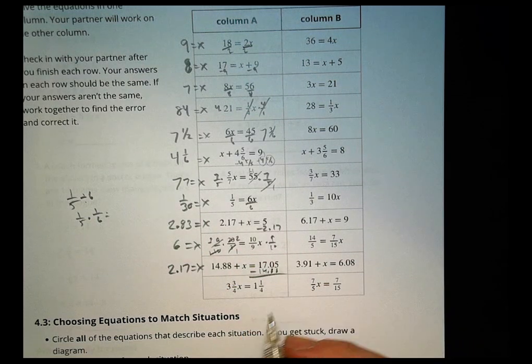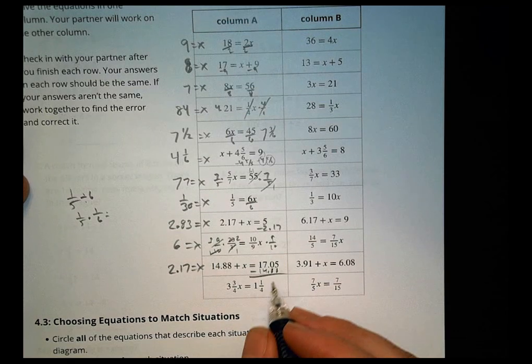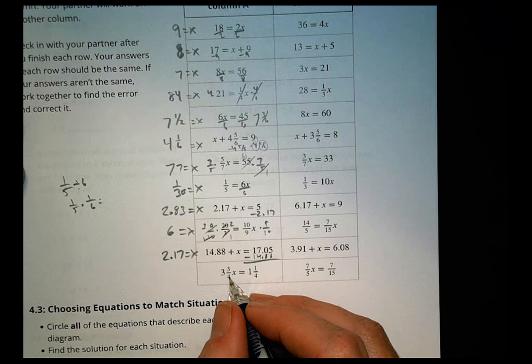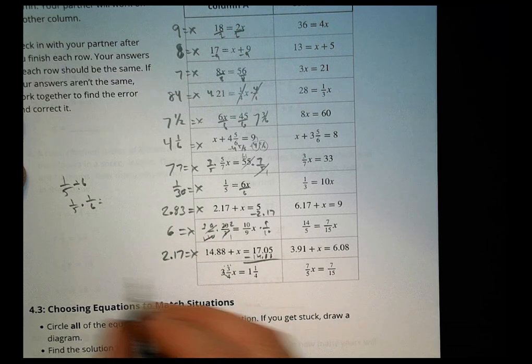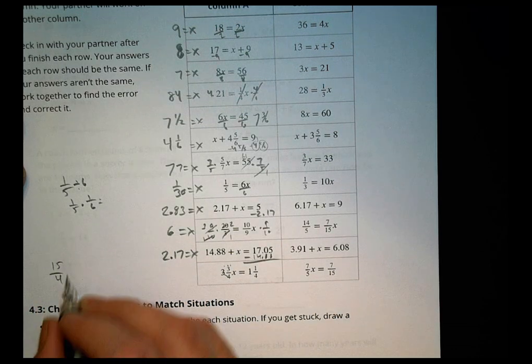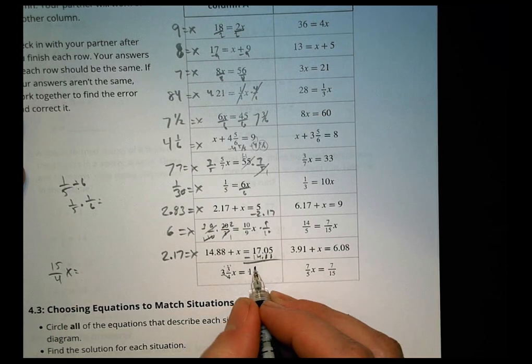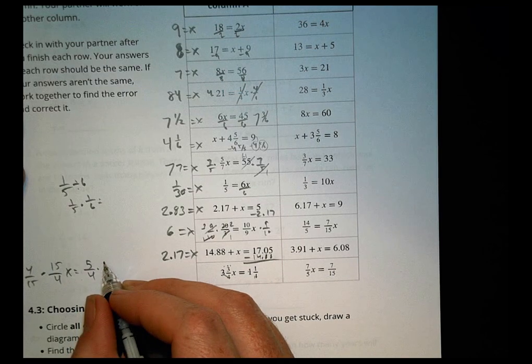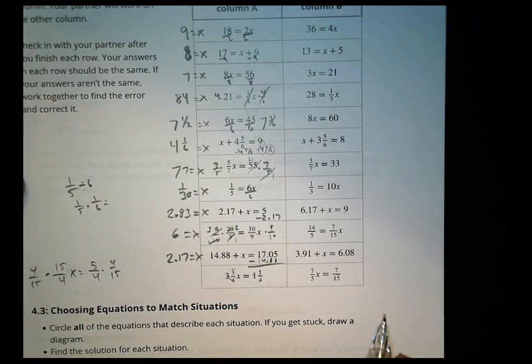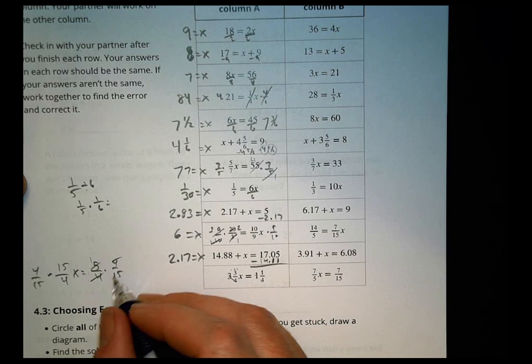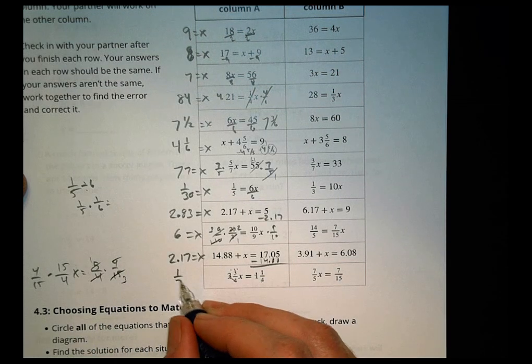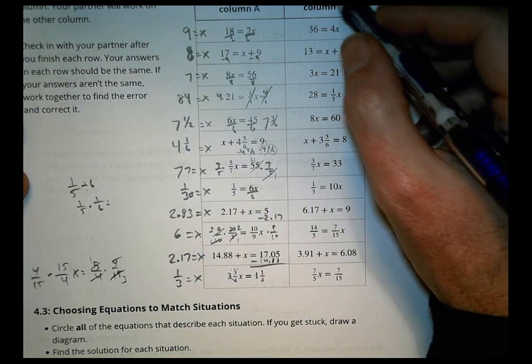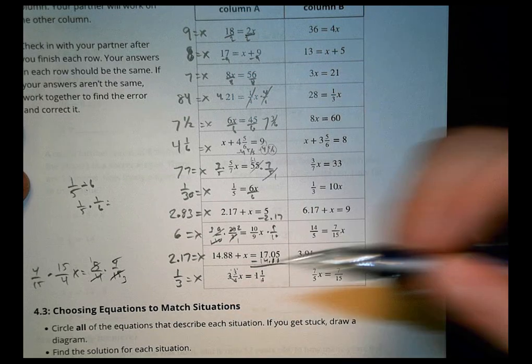And then finally, on this last one here, we have 3 and 3 fourths and all that good stuff there. We have to divide it. So let's rewrite this real quick. This is really 15 fourths x equals 4 times 1 is 4 plus 1 is 5, 5 fourths. Multiply by the reciprocal. And when you do that, the fours cancel. The 5 becomes a 1, that becomes a 3. And so x equals 1 third. So that's column A all done there. You're working on column B and see if your answers match those and see how you did.